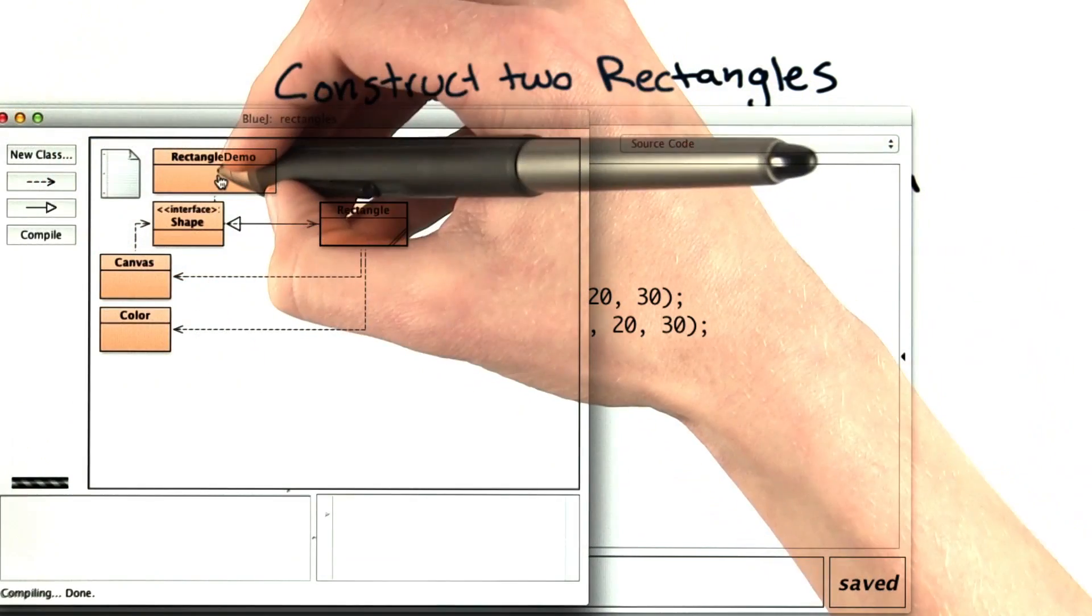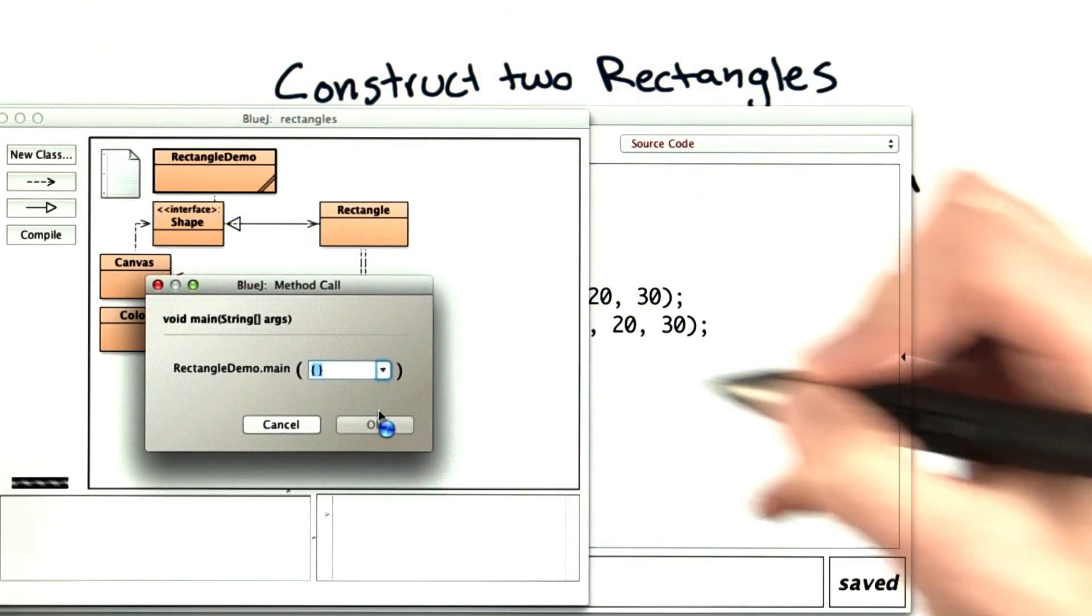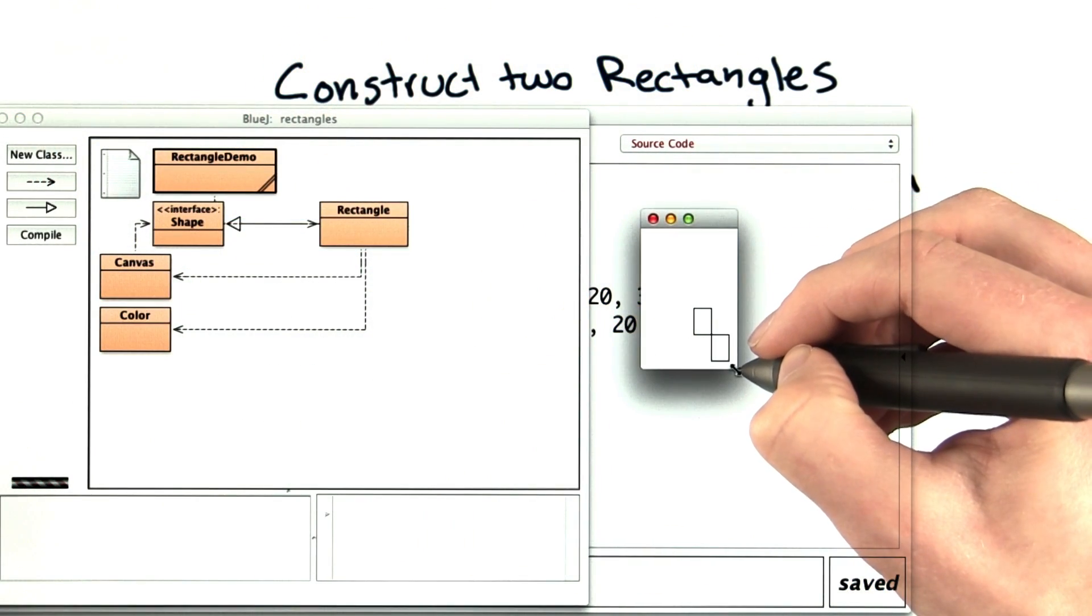Let's compile. And now I'll run my method. And it drew my rectangles, just as I asked for.